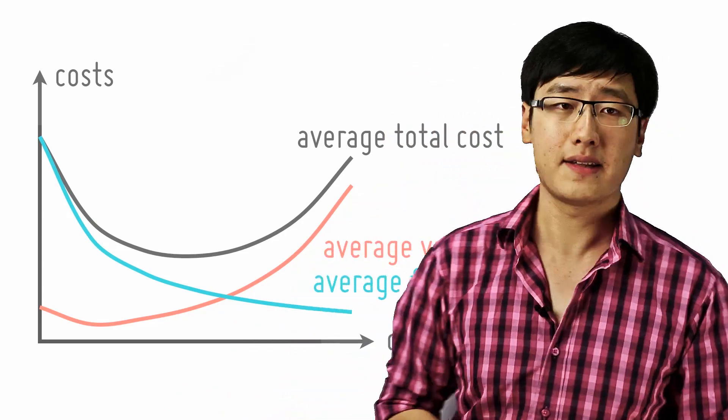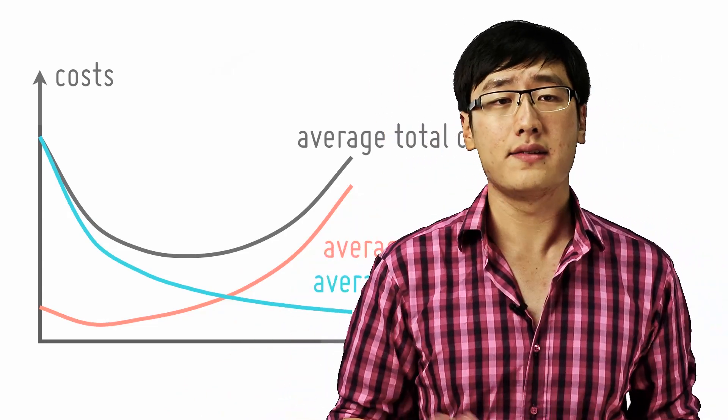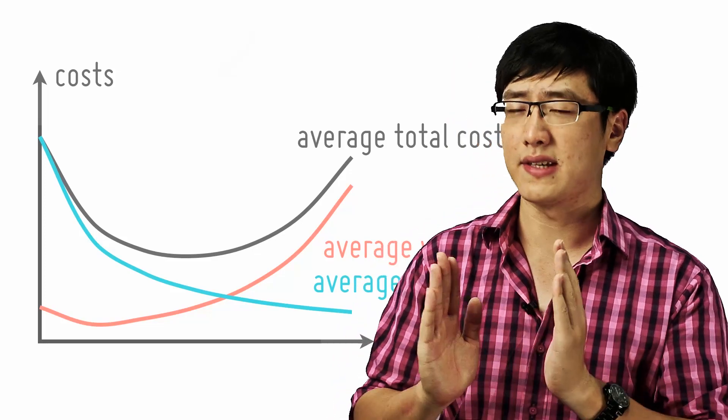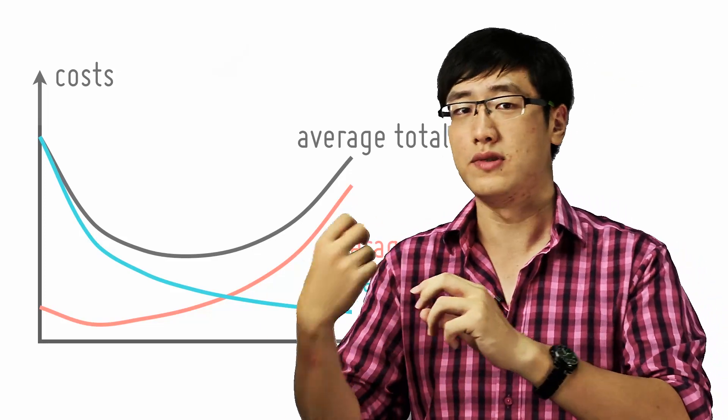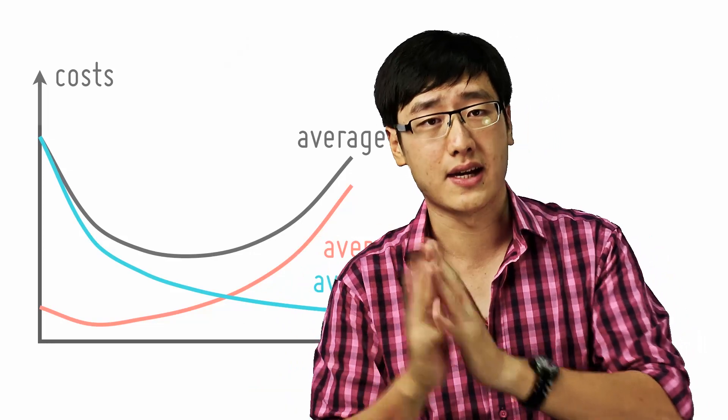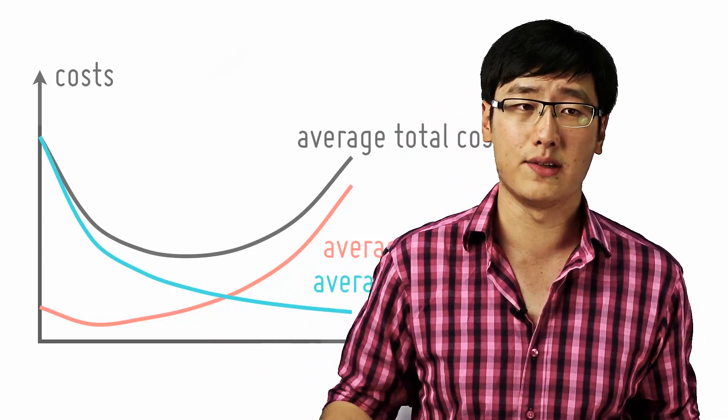The AVC nearly touches the AC because AC equals to AVC plus AFC. Since AFC nearly goes to zero, AVC approximates AC but never touches because AFC never becomes zero.